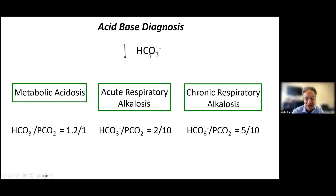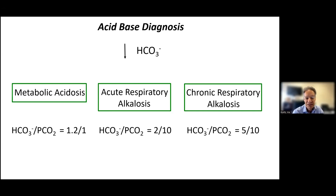Remember, the bicarbonate is calculated from the blood gas using the equation I just showed. What's measured is the pH and the PCO2 — there is a pH electrode and a PCO2 electrode, but there is no bicarbonate electrode. It's calculated by the blood gas machine, and it's a valid number. Just because it's calculated doesn't mean it has lower status. As long as the pH and PCO2 were measured correctly, the bicarbonate is a perfect number.